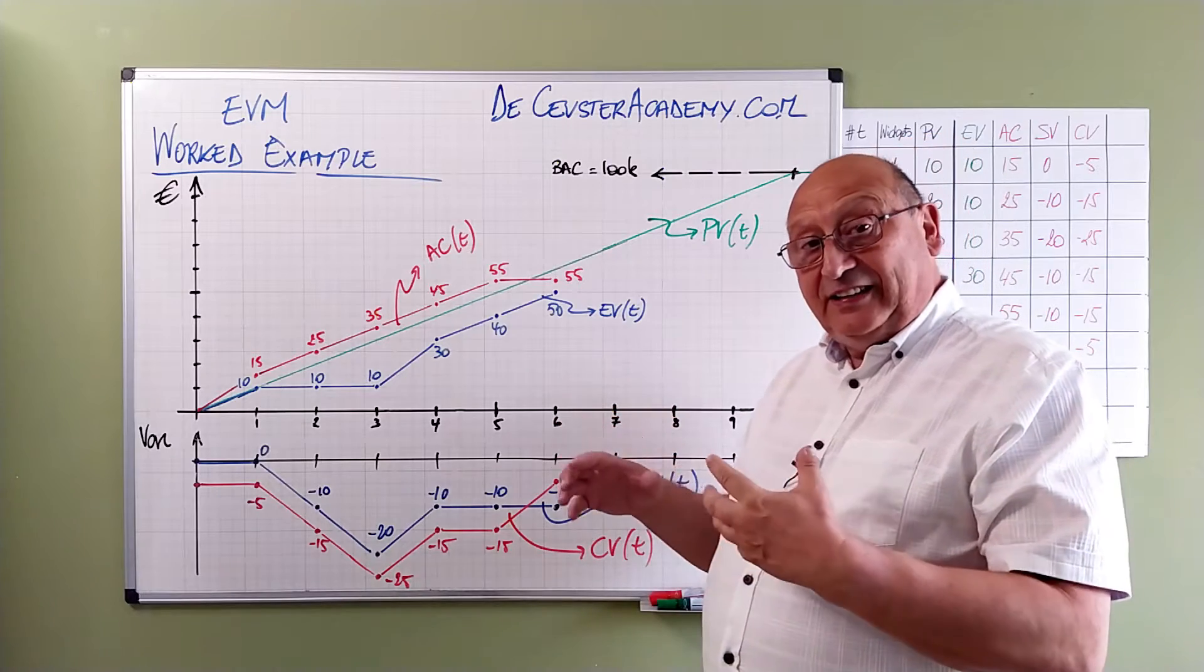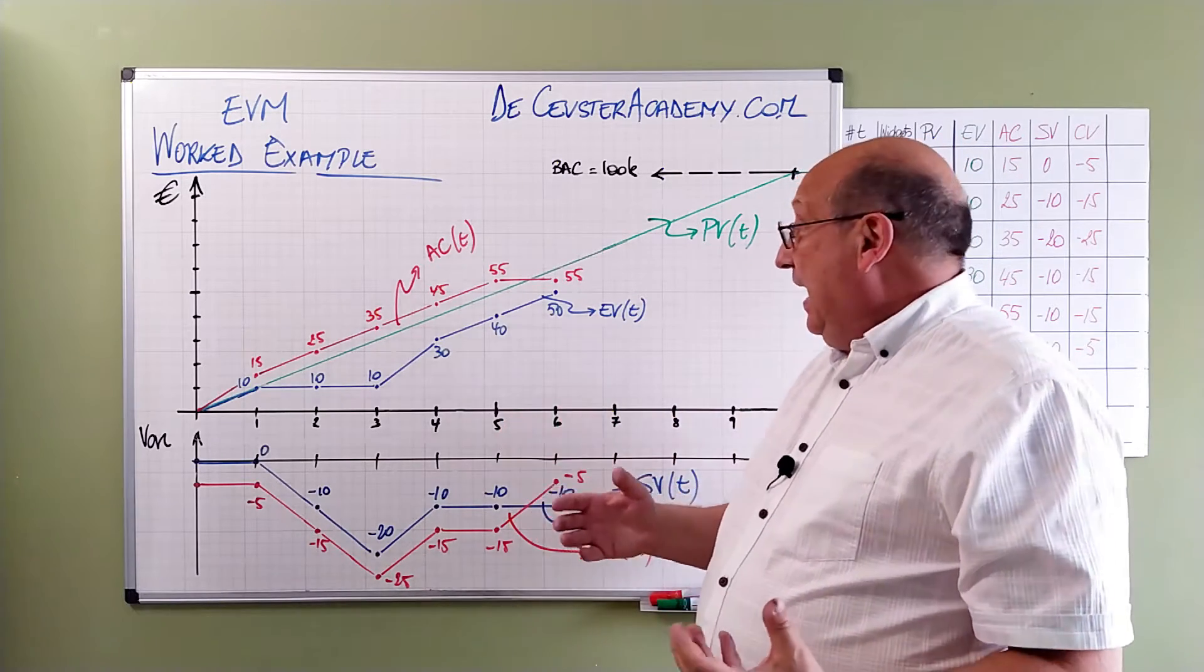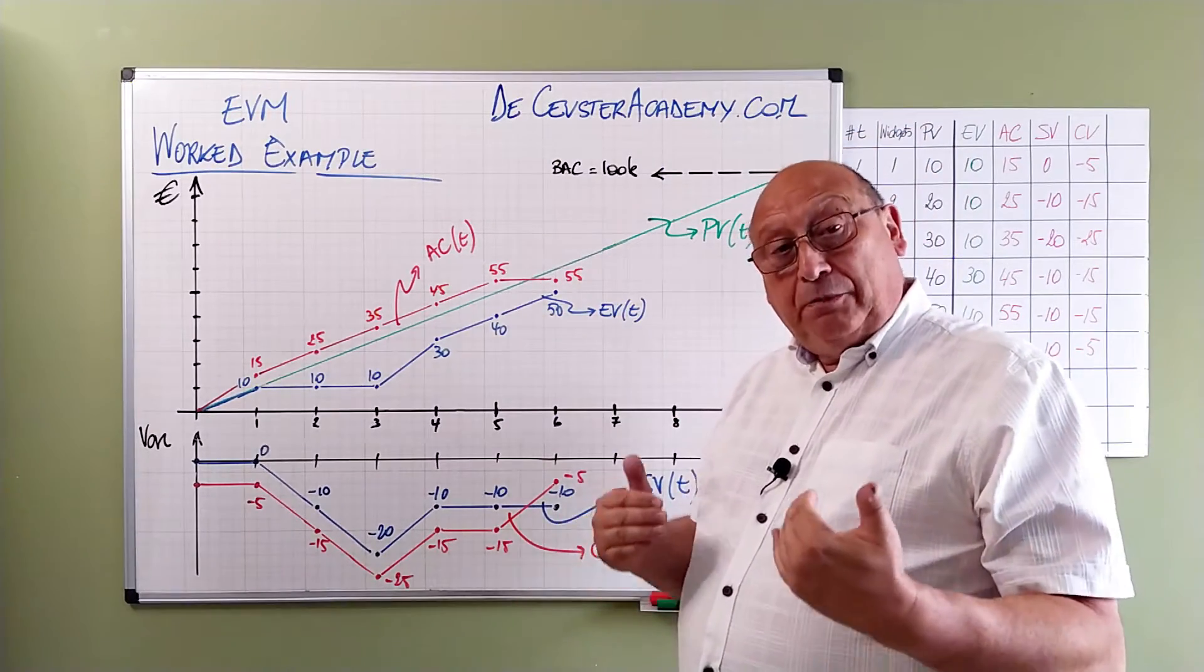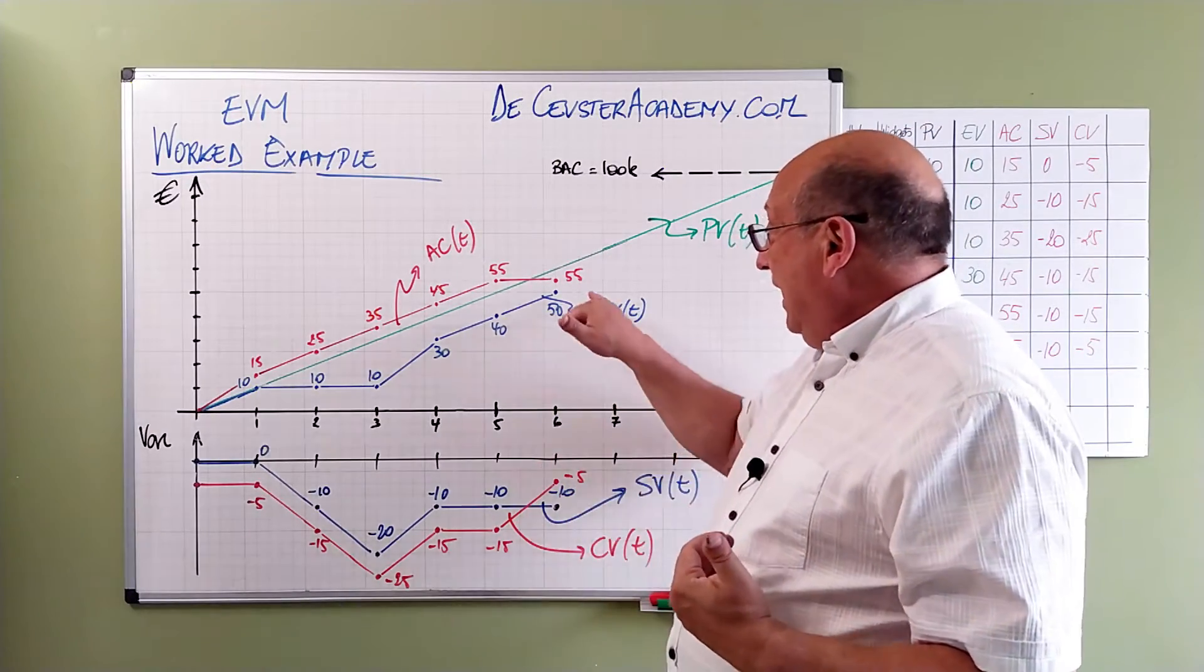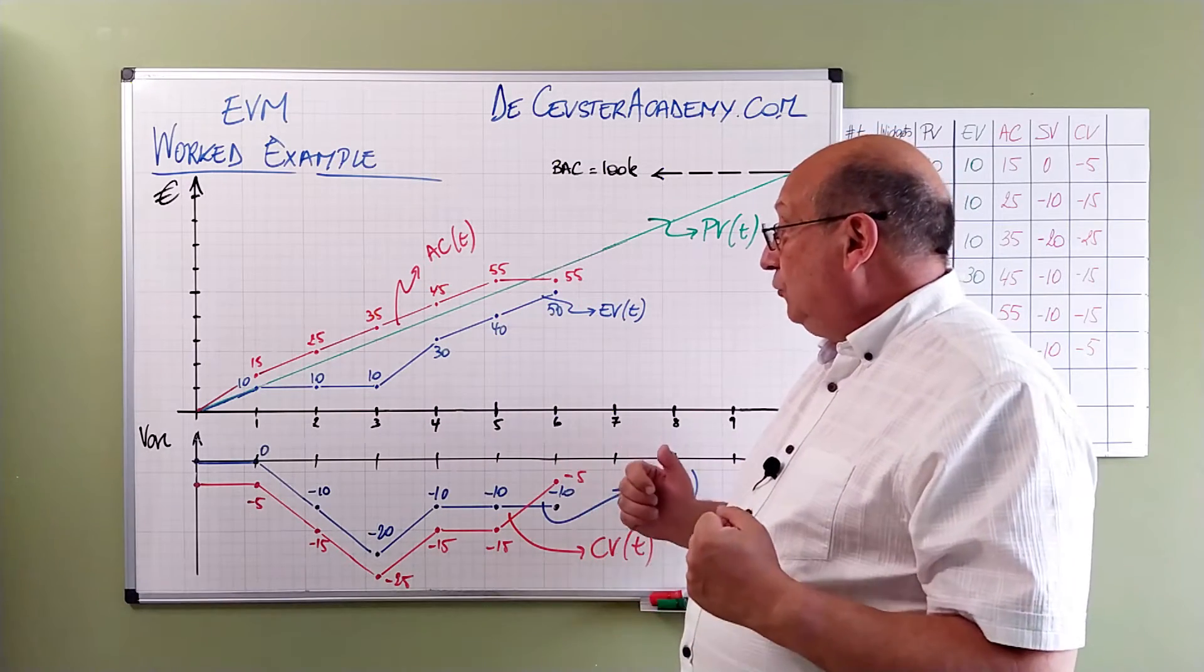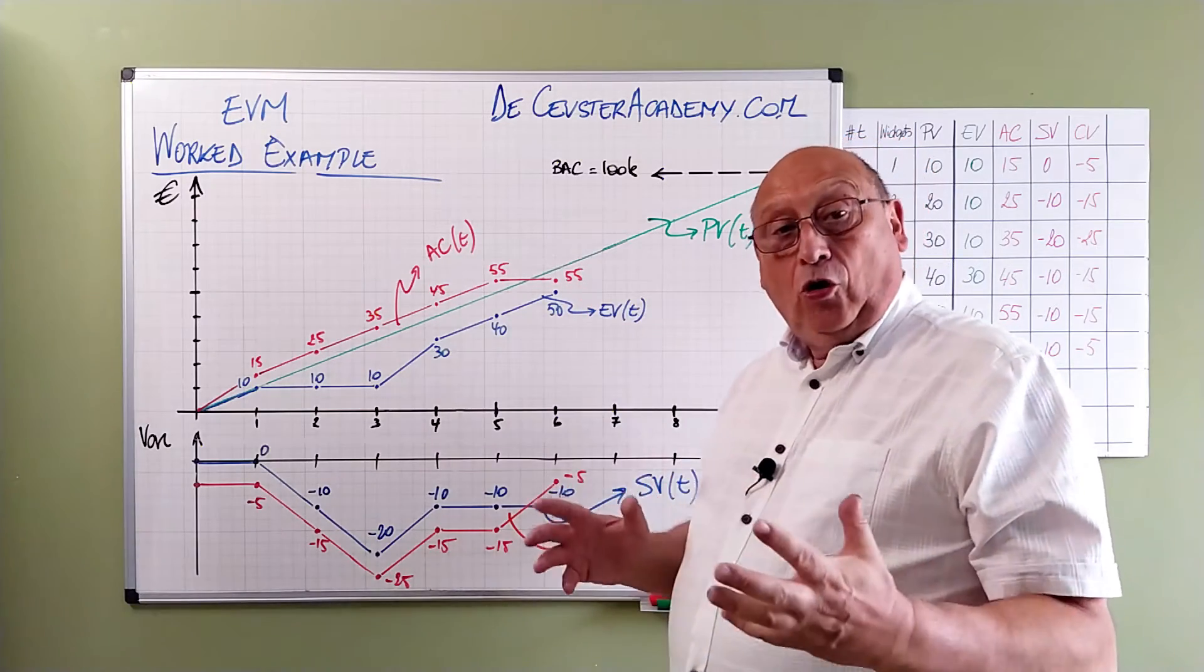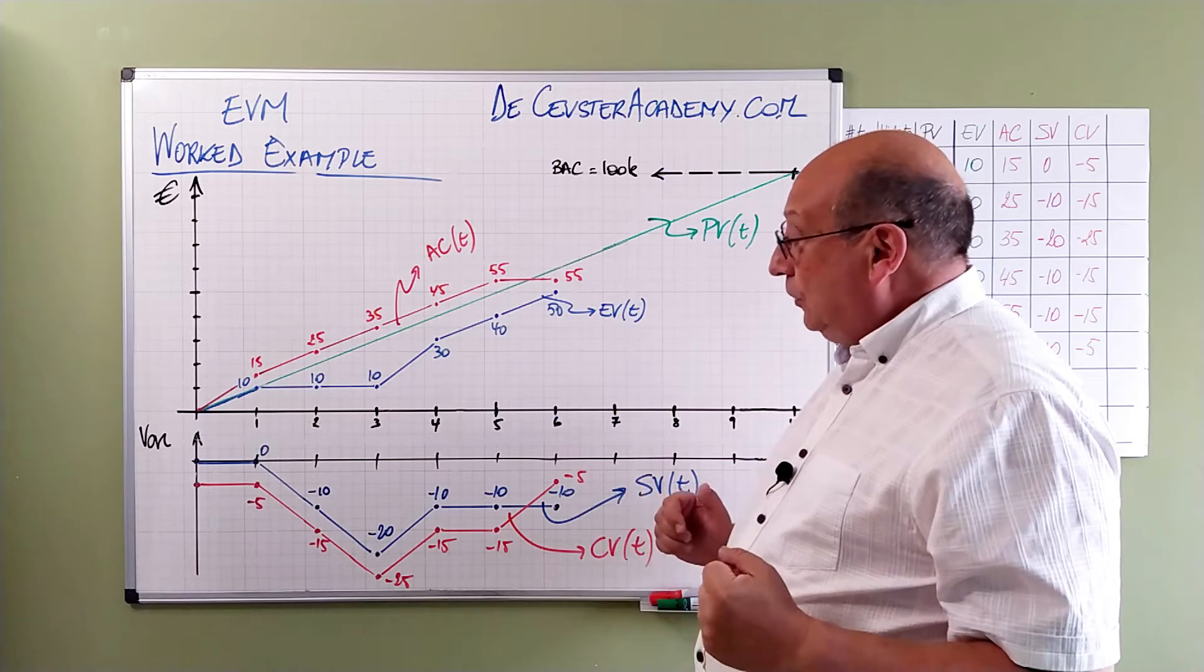We see that the cost is climbing at the same rate as the original green curve. But we are slightly above. And then for some reason we have an improvement. We have after period 6 only 55k as the actual cost.